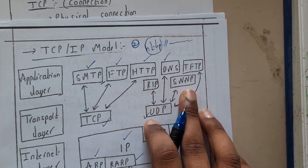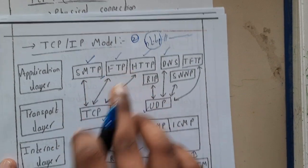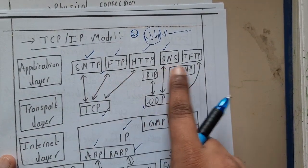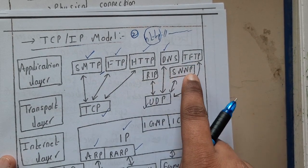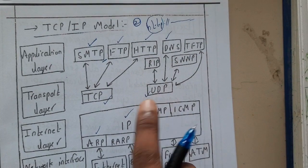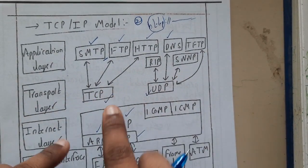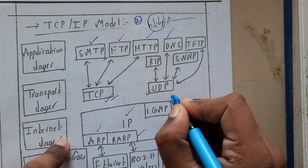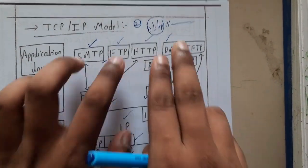SMTP, FTP, and HTTP use TCP, which is a wired connection, whereas DNS, TFTP, RIP, and SNMP use UDP, which is a wireless connection. So in the Transport layer, data can be transferred in two ways: TCP for wired connection and UDP for wireless connection.